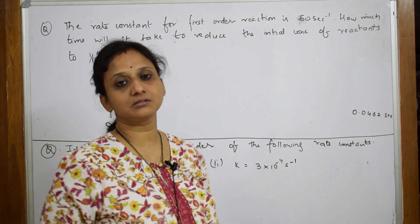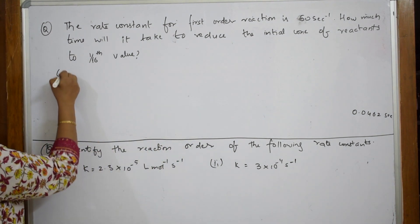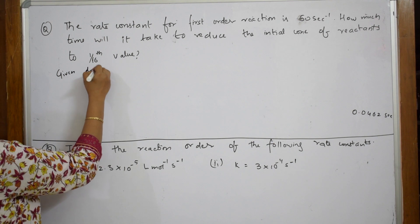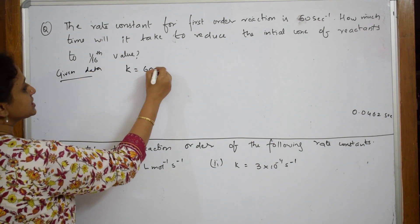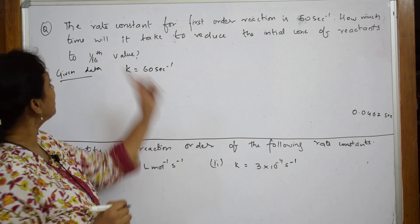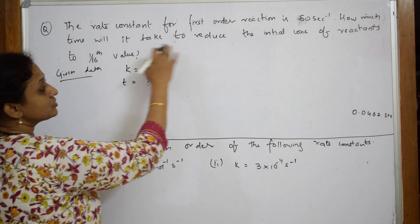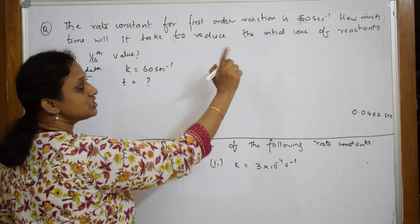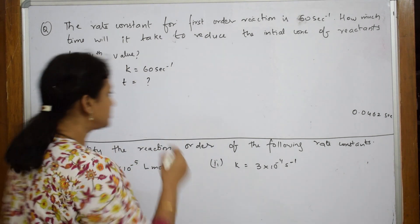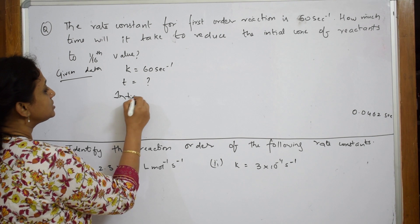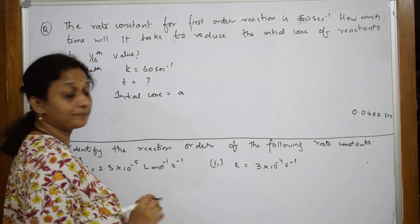Let us read: the rate constant of the first order reaction is 60 second inverse. Second inverse is the unit for the first order rate equation. So let us write the given data: k is equal to 60 second inverse. How much time will it take? I have to find out t — the time it will take to reduce the initial concentration.